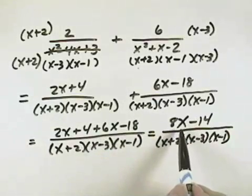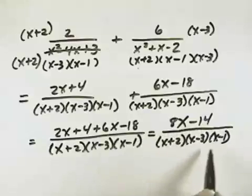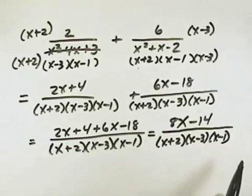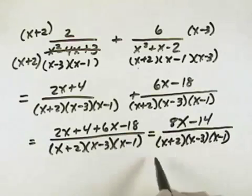We could factor a 2 out of this numerator, but the resulting factor will not be in common with the denominator, so it won't allow us to cancel any like factors, and therefore that is the simplified form for this solution.